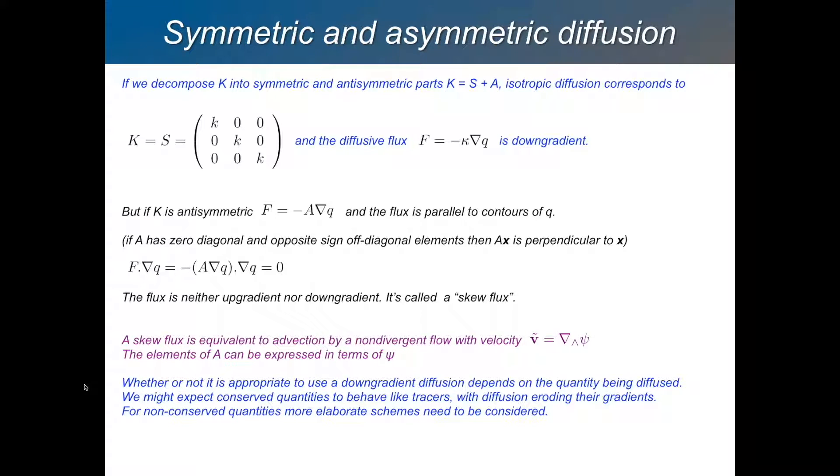What kind of diffusion we're going to pick, what kind of diffusion we're going to use, whether it's just going to be straightforward isotropic downgradient diffusion, or whether we'll have some anti-symmetric terms in this matrix that depends on the problem we're trying to solve. What kind of tracer variable we're trying to parameterize the effect of transients on?